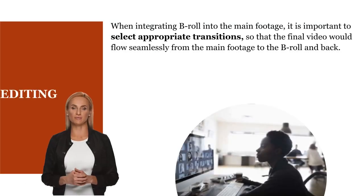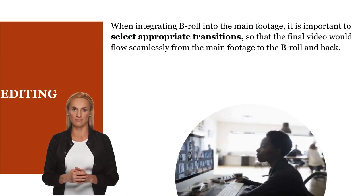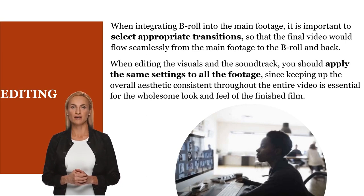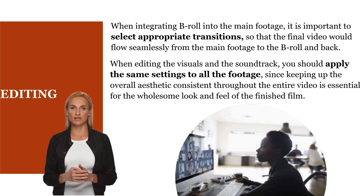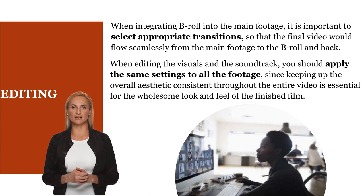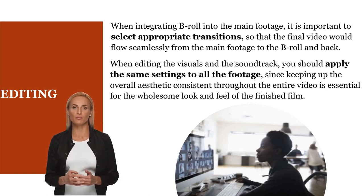At the very beginning of the editing process of your video, you have to integrate your B-Roll footage. It is important to select appropriate transitions so that the final video would flow seamlessly from the main footage to the B-Roll and back. When editing the visuals and the soundtrack, you should apply the same settings to all of the footage, since keeping up the overall aesthetic consistent throughout the entire video is essential for the wholesome look and feel of the finished film. Even when your B-Roll is meant to introduce contrast and add emphasis to the main video, it must not appear as a patchwork but as an integral part of the production.